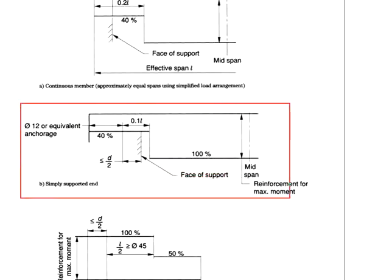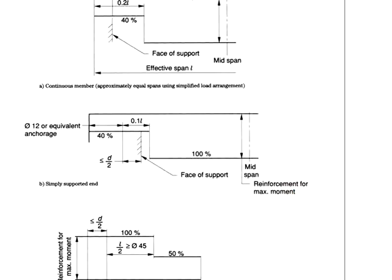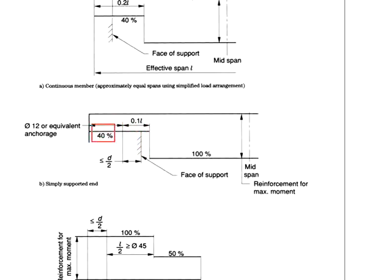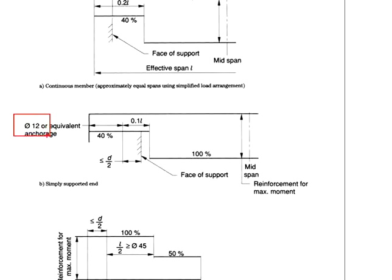Let us first look at the simply supported slab. For a simply supported slab, we are looking at the bottom reinforcement. Maximum moment normally occurs at the mid-span. Reinforcement is provided to resist the maximum moment. You may have 100% of the reinforcement area at mid-span. Towards the support, the amount of reinforcement may be reduced to 40%. The curtailment can be done at a distance of 0.1 times the effective length from the centroid of the support, which should not be greater than half of the effective depth from the face of the support. The reinforcement extended into the support will require sufficient anchorage length of not less than 12 times the bar diameter.